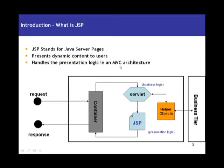The C part is the controller. The controller controls the whole application flow. Whenever a request comes into the application, it is grabbed by the controller. The controller decides, based on the request, which helper object to make use of and which view object to use to send the response back to the user. So basically, the controller intercepts all requests and controls the whole flow of the application.